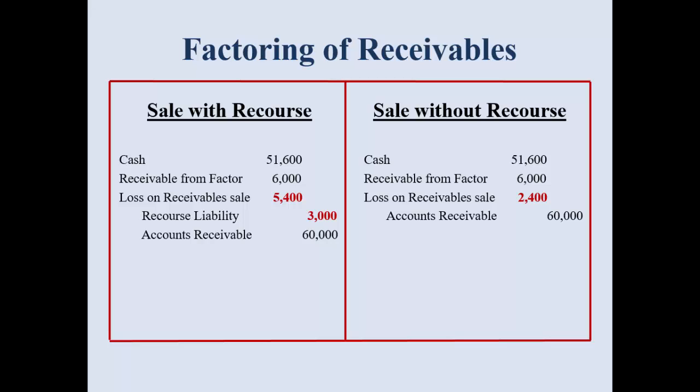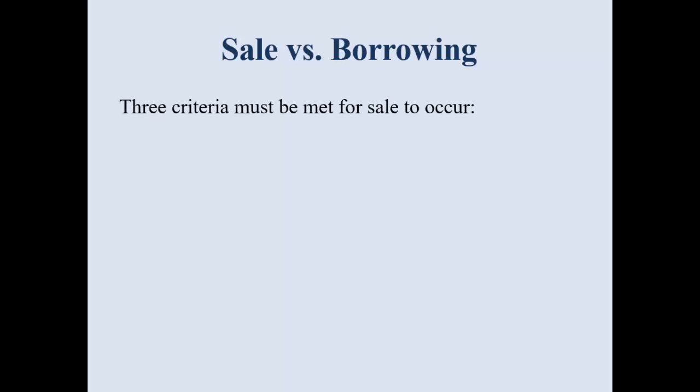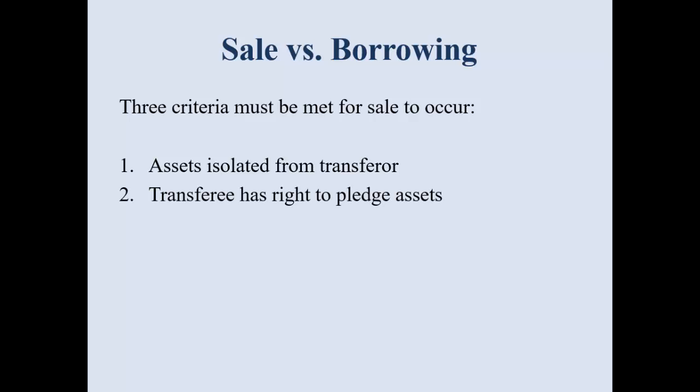Here is the key difference: am I recording a liability? Notice the loss is larger with the sale without recourse because of that missing liability. Now, sale versus borrowing — three criteria must be met for a sale to occur: the assets are isolated from the transferor (the seller), the transferee (the buyer) has the right to pledge those assets, and the transferor gives up control of the transferred assets. If these criteria are not met, it is not a true sale, not true factoring — it's simply secured borrowing, where you put your accounts receivable up as collateral.